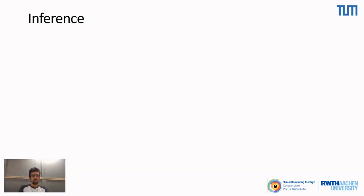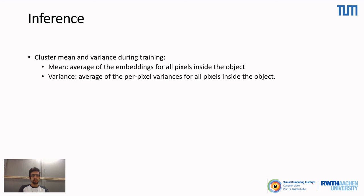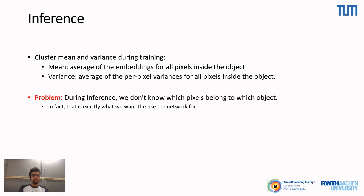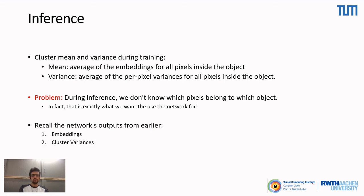During training we have access to ground truth segmentation masks, so we can compute the average per-pixel embeddings and variances to derive object cluster parameters for each object. The problem is that during inference we don't know which pixels belong to which object — that is exactly what we want the network to tell us. So during inference, determining the Gaussian distribution parameters for each object works differently, using the third network output: the cluster center heat map.